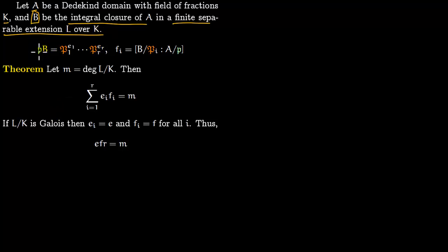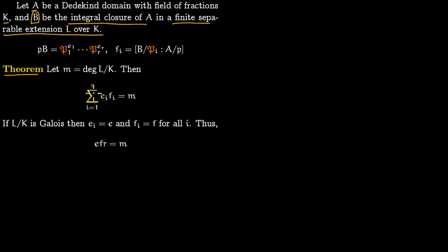Say you have a prime ideal p in A, and this factorizes in B. We have talked about this before: fᵢ is the degree of the extension of B modulo capital Pᵢ over A modulo p. Our big theorem was that n equals the degree of extension of L over K, and the summation Σeᵢfᵢ = n, where eᵢ comes from the factorization and fᵢ is the residue field degree.